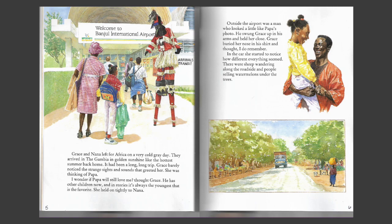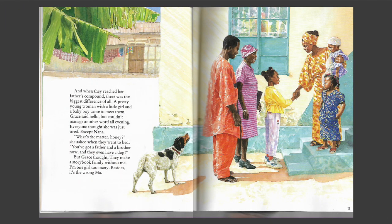In the car, she started to notice how different everything seemed. There were sheep wandering along the roadside and people selling watermelon under the trees. And when they reached her father's compound, there was the biggest difference of all. A pretty young woman with a little girl and a baby boy came to meet them. Grace said hello but couldn't manage another word all evening. Everyone thought she was just tired, except Nana. "What's the matter, honey?" she asked when they went to bed. But Grace thought, "They make a storybook family without me. I'm one girl too many. Besides, it's the wrong maw."